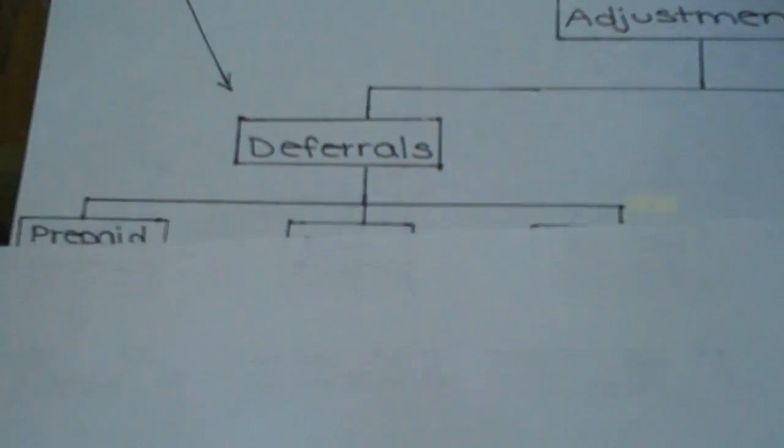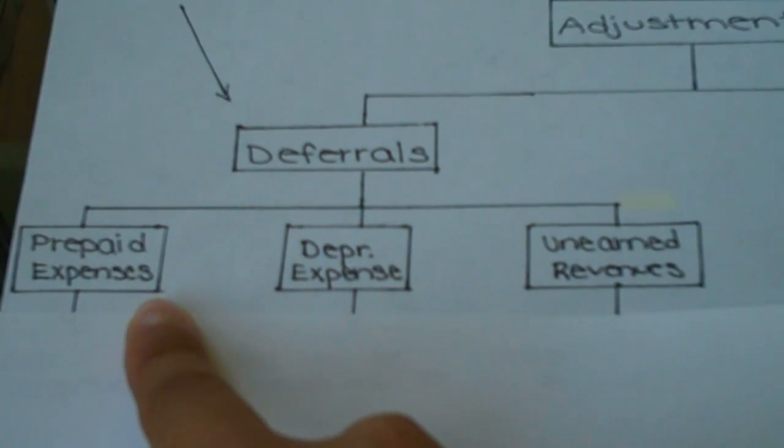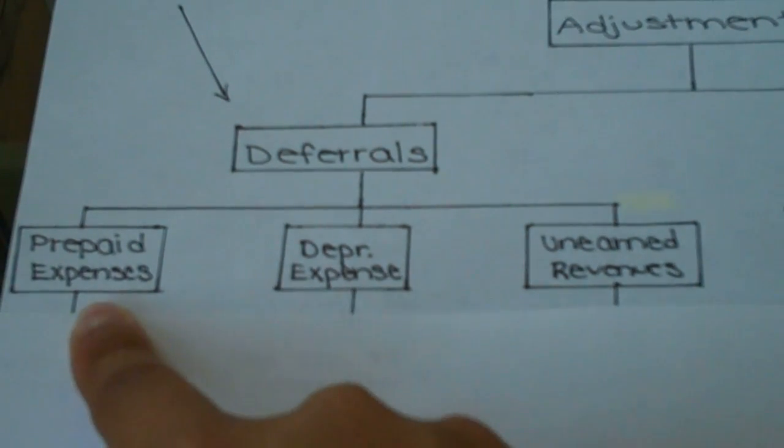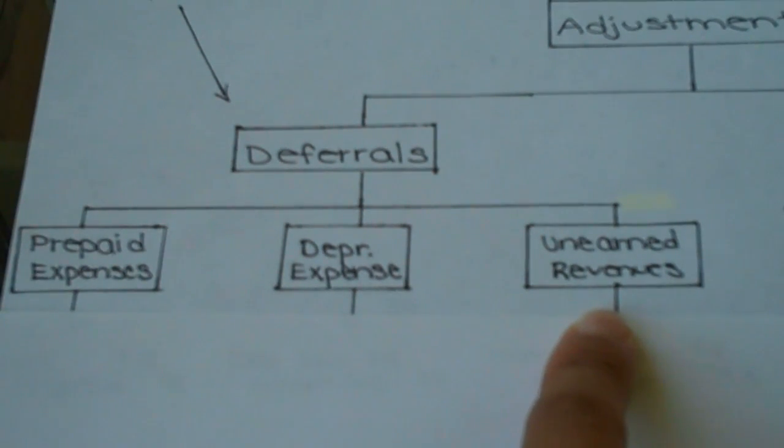So specific deferral examples would be prepaid expenses. There again, the example being of prepaid rent or insurance. Depreciation expense, which really falls under prepaid expenses. We'll talk more about that one. And then unearned revenues, which we saw in the last chapter.